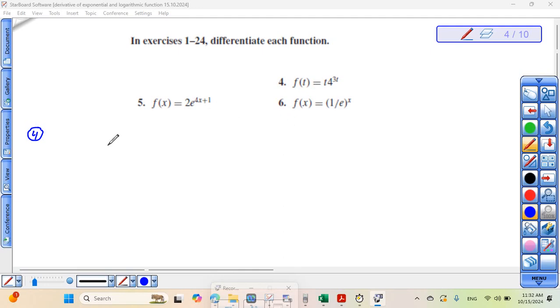Question four. F of t equals t times four to the power three t. Here you need to think. Don't try to solve directly. Think. We have here product rule. Why? Because t times four. Product rule.